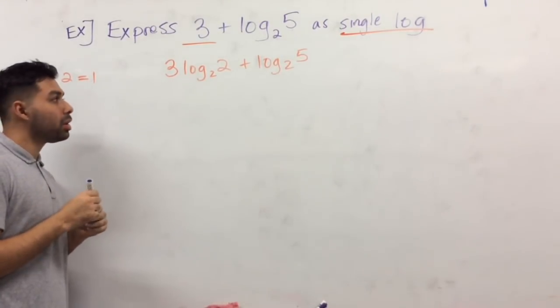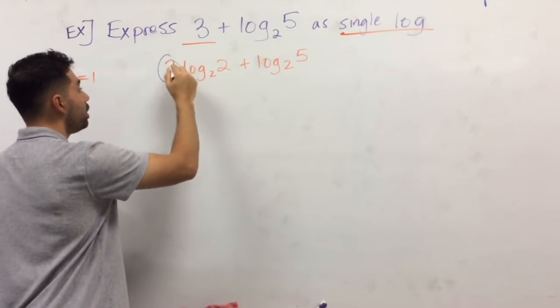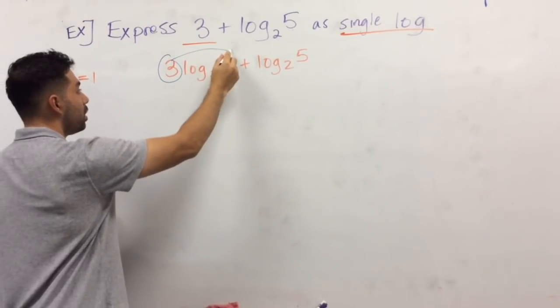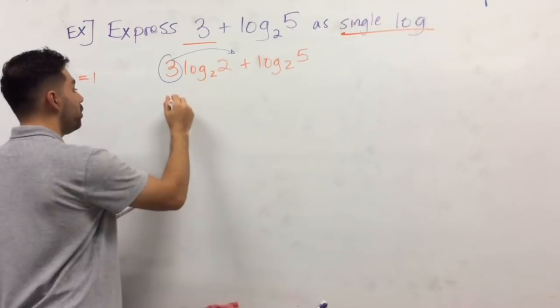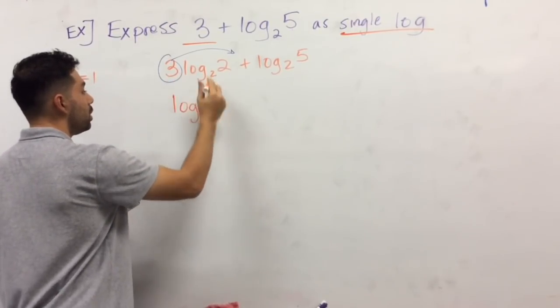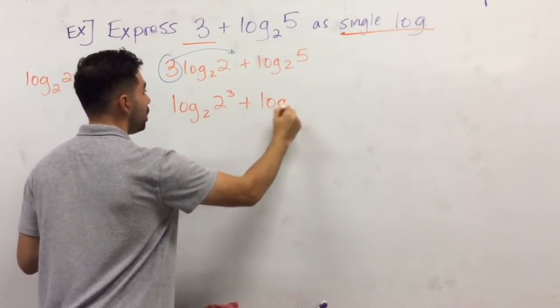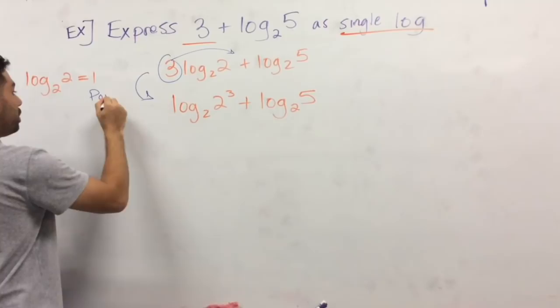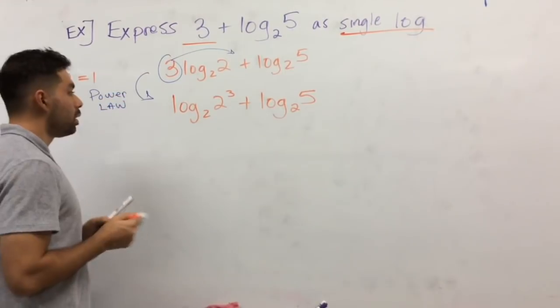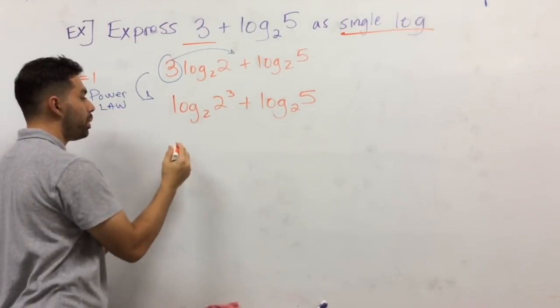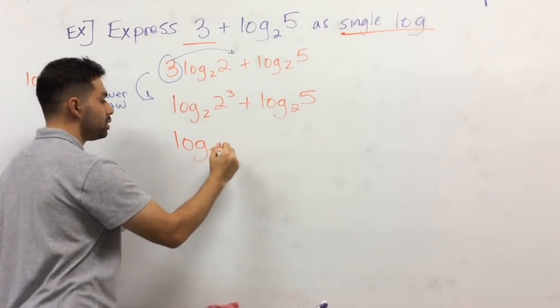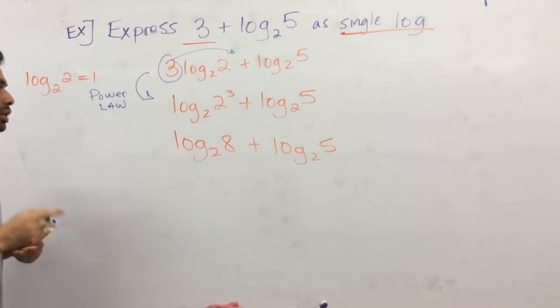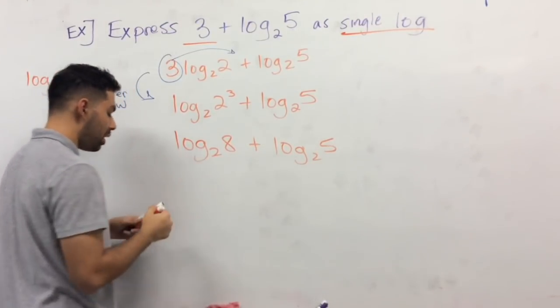All right, the next thing I can do is, since my goal is to have one single log, is to basically use the power rule, right? Now, we're going to use it a bit in reverse here. So, we can say, this would be essentially log of base 2 and then 2 to the third power plus log base of 2 and 5. So, in this example, from here to here, we use the power law. Now, let's go ahead and simplify here, since we have 2 to the third power here. Let's go ahead and say log of base 2. That would be 8 plus log of base 2, 5.